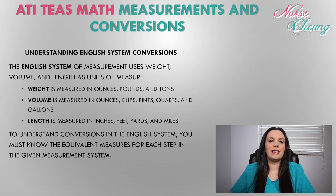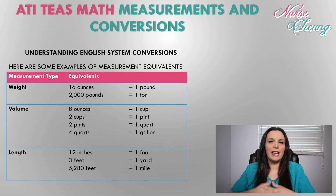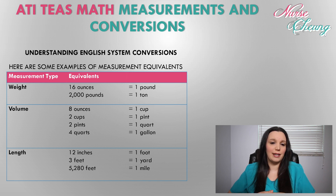To understand conversions in the English system, you must know the equivalent measures in each step of the given measurement system to convert it to the metric system. Looking at the table, I've given you some of the common measurement equivalents. For weight, 16 ounces is equal to one pound, and 2,000 pounds is equal to one ton.